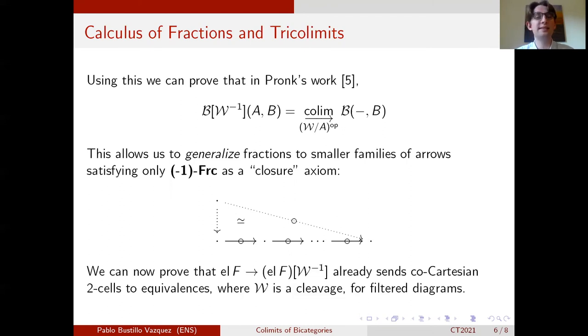And now using this slightly more general notion of localization of bicategories we can try to work with tricolimits, filtered tricolimits in bicats. And so if we take such a filtered diagram then the first thing we can do is look at the canonical functor from the Grothendieck construction to its localization and we can notice that this canonical functor already sends the cocartesian 2 cells to equivalences. And because it does, we can see that it's not necessary to further localize by those cocartesian 2 cells. And hence we can immediately prove that the filtered tricolimits of this functor is the localization by calculus of fraction of the Grothendieck construction.